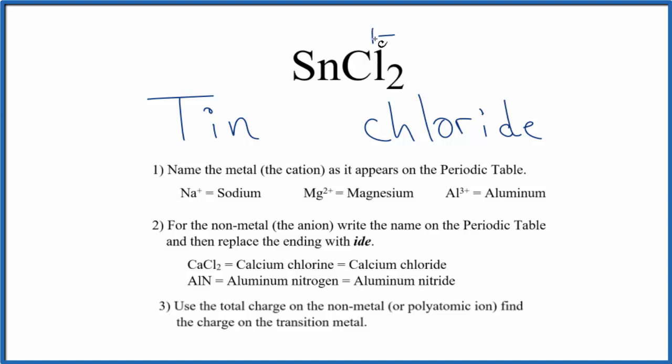Two chlorines, two times one minus, that's two minus. The tin has to be two plus for this to all add up to zero, have a net charge of zero.